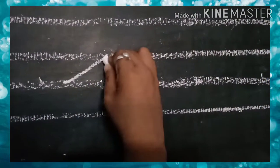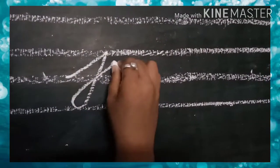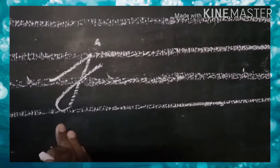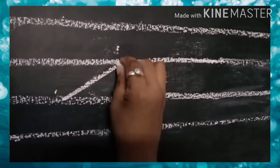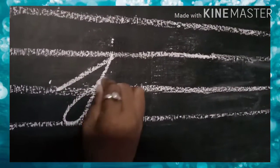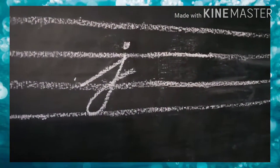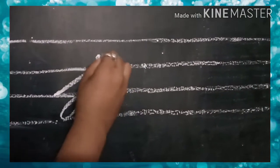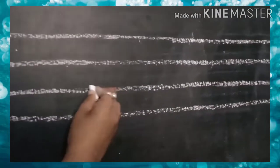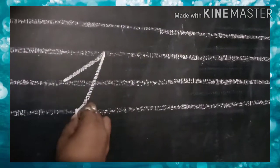Start from here, do like this — yes! This is cursive small letter 'j'. Again, you have to write slantingly — don't write straight. Yes, again let's write one more line. It goes like this, dot. See again.